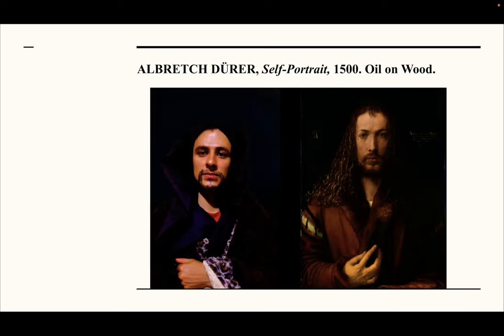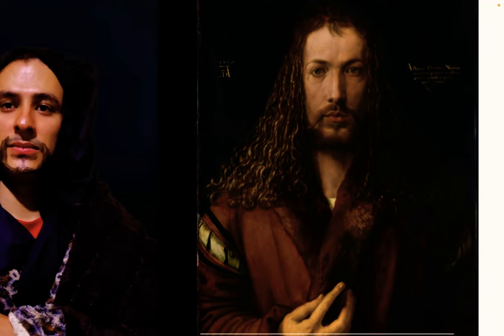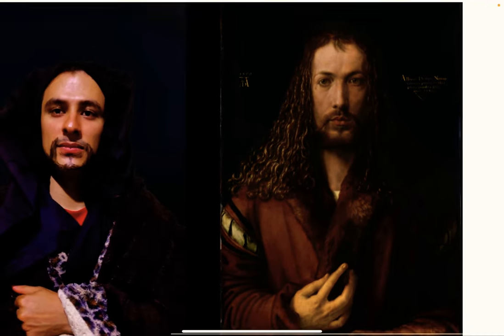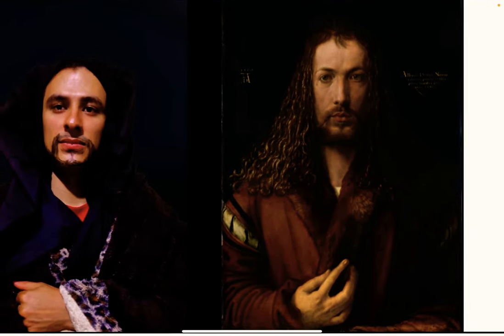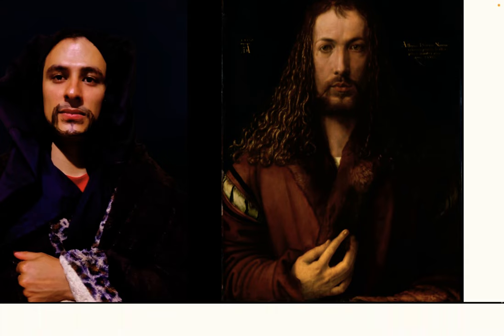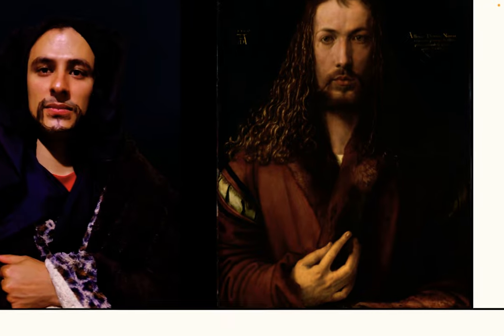The next one is Albrecht Dürer's Self-Portrait, 1500, oil on wood. The image is supposed to be a confident and self-assured person facing forward towards whoever is looking at the painting, and he is also dressed elegantly.